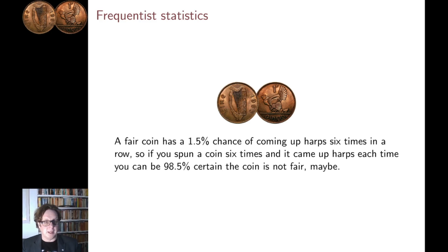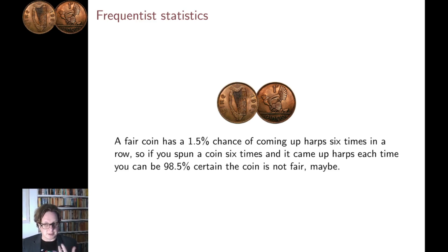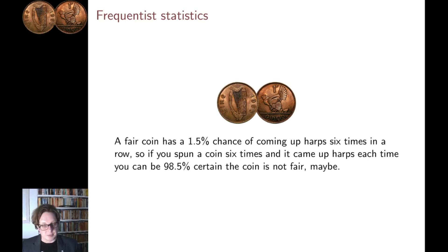Here's an example. A gambler wants to know if a coin is fair and flips the coin six times in a row and gets six harps. The gambler might then reason: the chance of that happening by chance is only 1.5%, from the calculation we did just a second ago. And so the gambler can therefore be 98.5% certain that the coin is not fair. In frequentist statistics, 95% is usually taken as the threshold for significance or certainty.